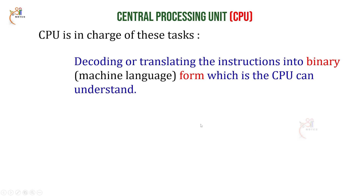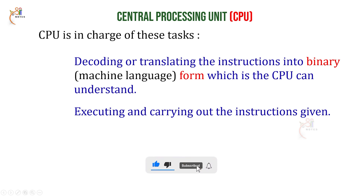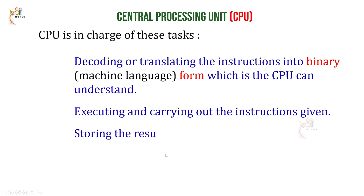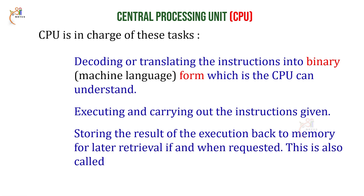Next, we have execution - carrying out the instructions given. The CPU will execute and produce the output. Then, storing the result of the execution back to memory for later retrieval if and when requested. This is also called writing to memory. So we have reading from memory and writing to memory.